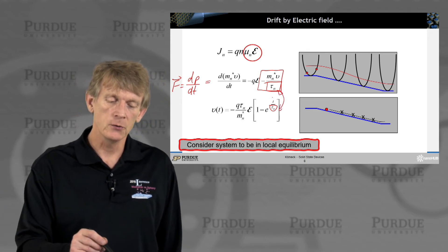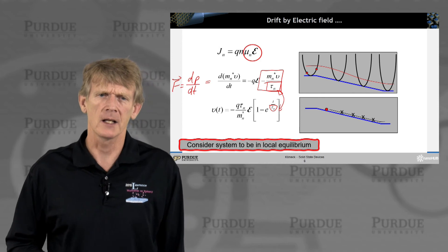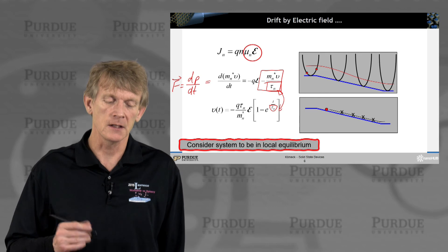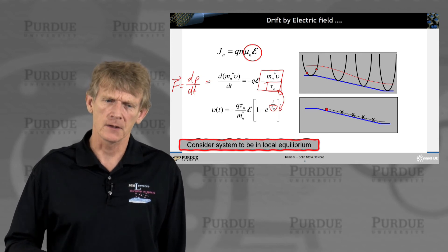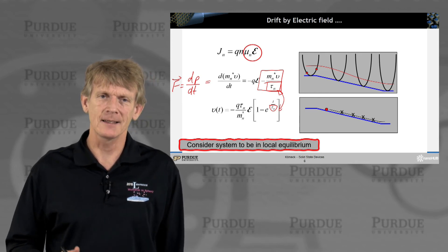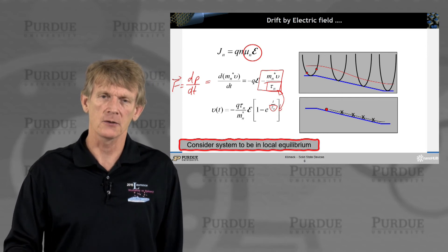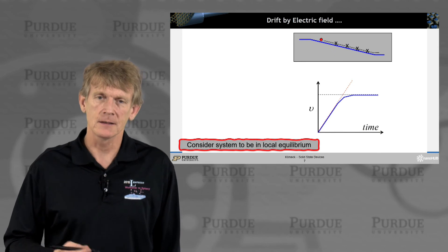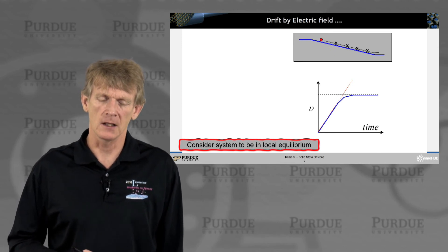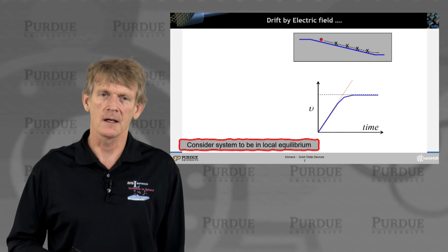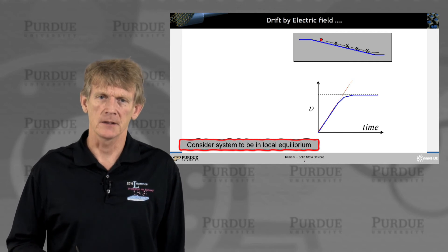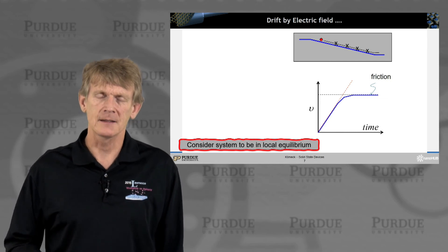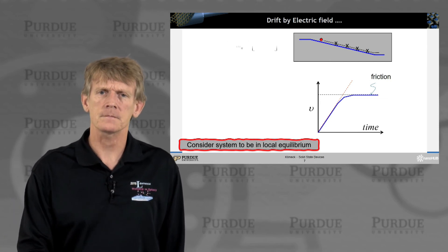Since if you did not have this relaxation term, you would not have this complex exponential and the velocity would just increase indefinitely. So this relaxation really dampens the electron flow and lets it come to a maximum. So that's the current. The charge is seen here. So the electron velocity increases in time and then it saturates. And this is due to the friction in the system or the relaxation in the system.